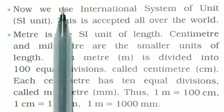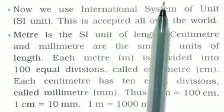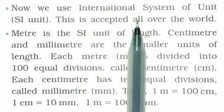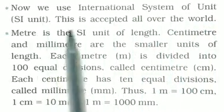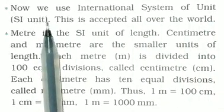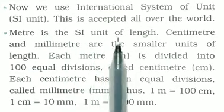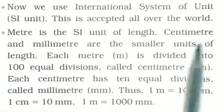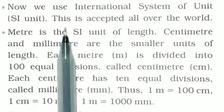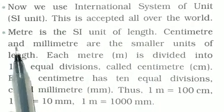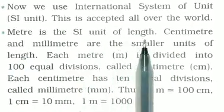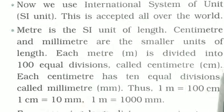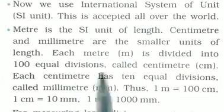Now we use the International System of Units, which is accepted all over the world. Meter is the SI unit of length. Centimeter and millimeter are the smaller units of length. Each meter is divided into 100 equal divisions called centimeters.